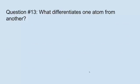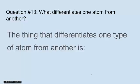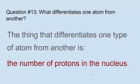Question thirteen: What differentiates one atom from another? Well, he said it hundreds of times. The thing that differentiates one type of atom from another is the number of protons in the nucleus. The number of protons in the nucleus. That's what differentiates one type or group of atoms from another. So gold and silver, the difference is the number of protons in the nucleus of each atom.